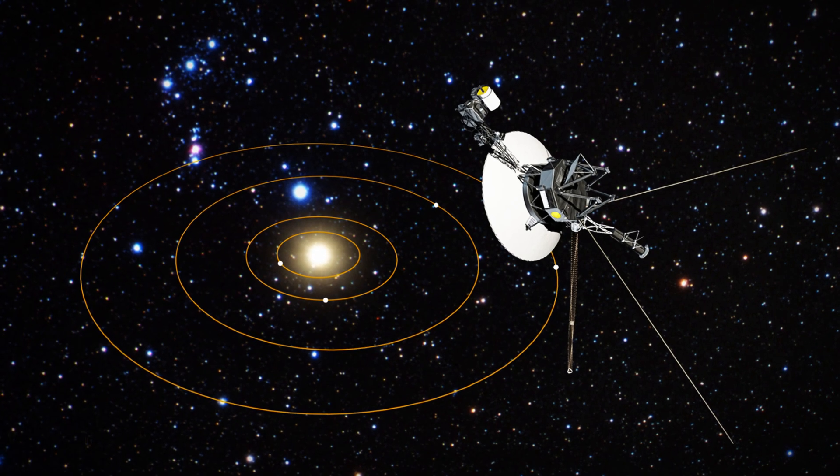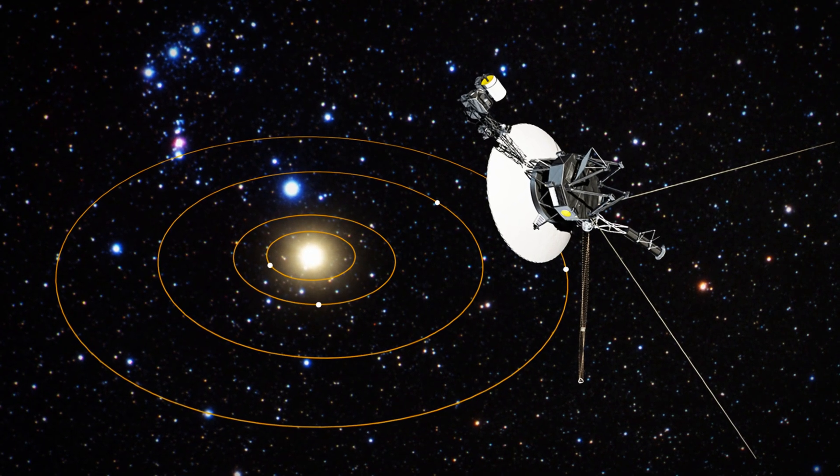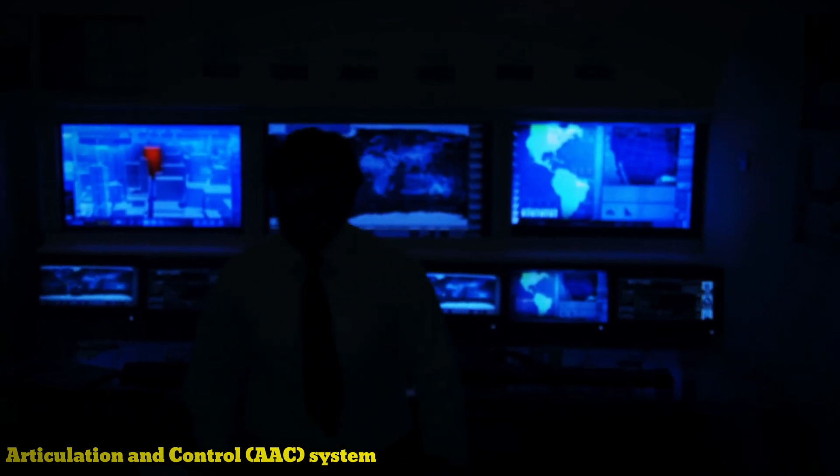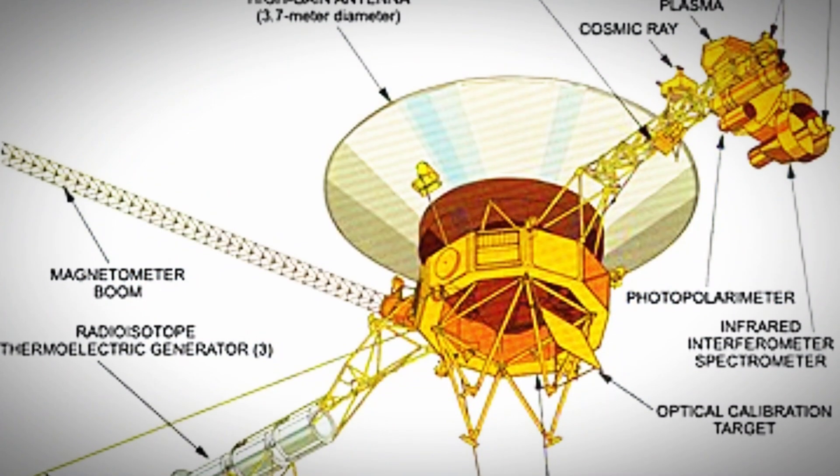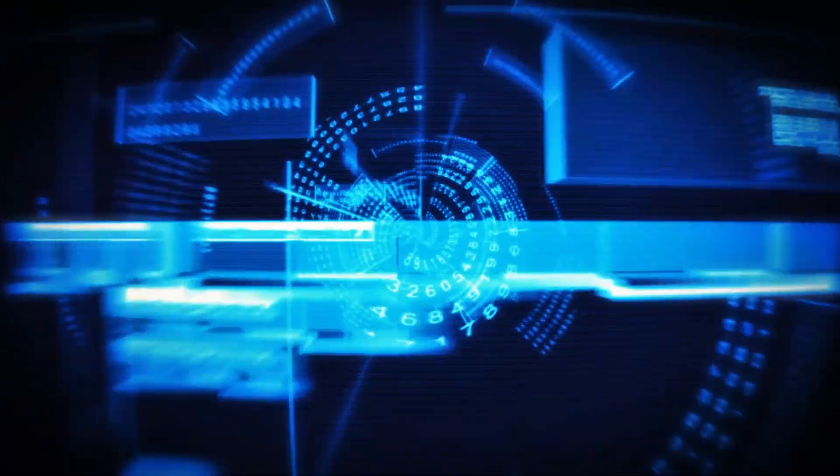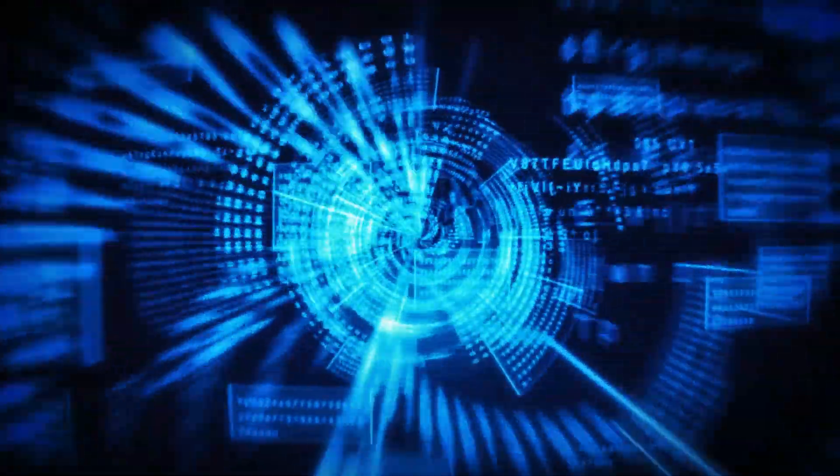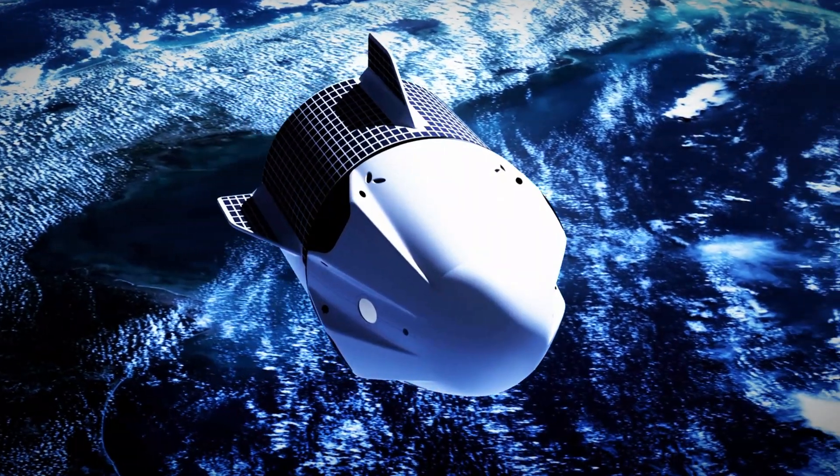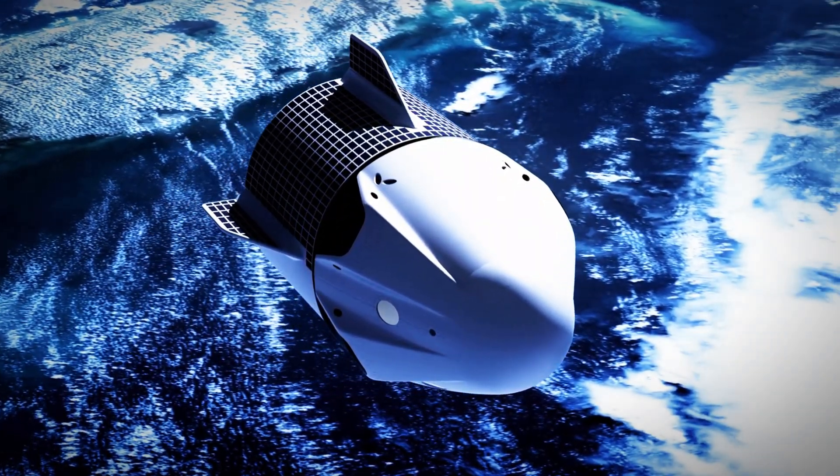In May 2023, Voyager 1 experienced an unexpected issue. Its Attitude Articulation and Control AACS system, responsible for maintaining smooth operations, began malfunctioning. Instead of transmitting its usual status updates, it sent back incomprehensible data, as if the spacecraft had suddenly lost its ability to communicate.